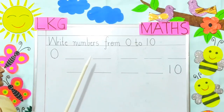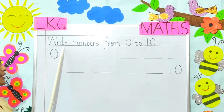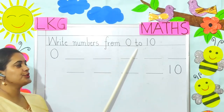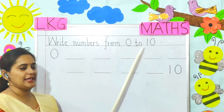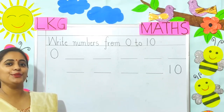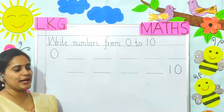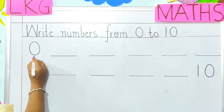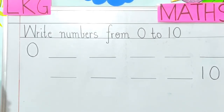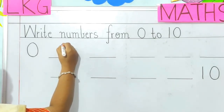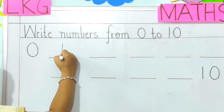Children, our next topic is writing numbers from 0 to 10. So here we will write the numbers from 0 to 10. The first number, 0, is written over here. What will come after 0, children? Yes, 1.